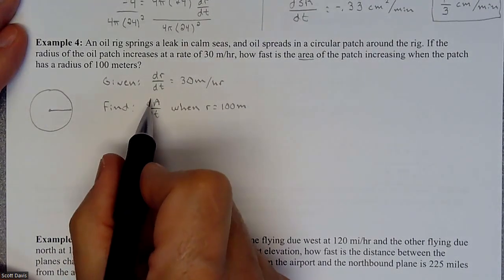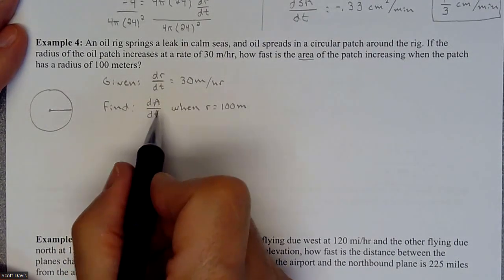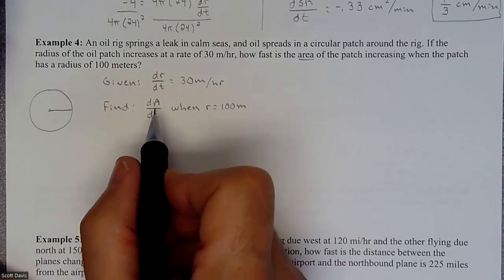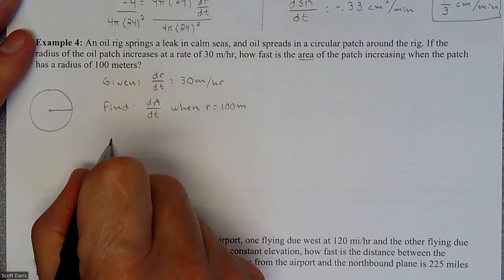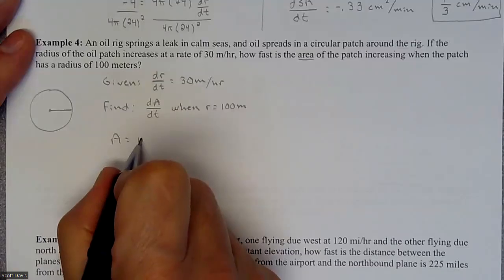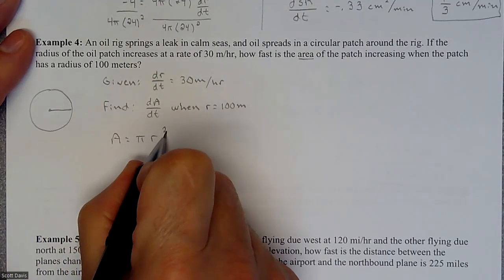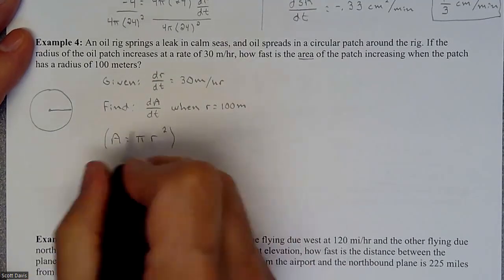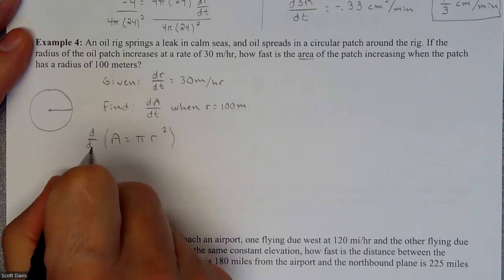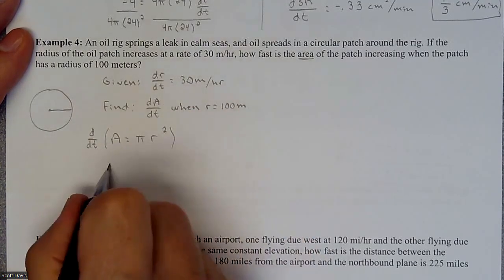We need some sort of an equation that when we do the derivative we're going to get dA/dT. We're talking about the area of a circle, and the area of a circle is πr². And if we take the derivative with respect to time, that's going to give us our dA/dT.